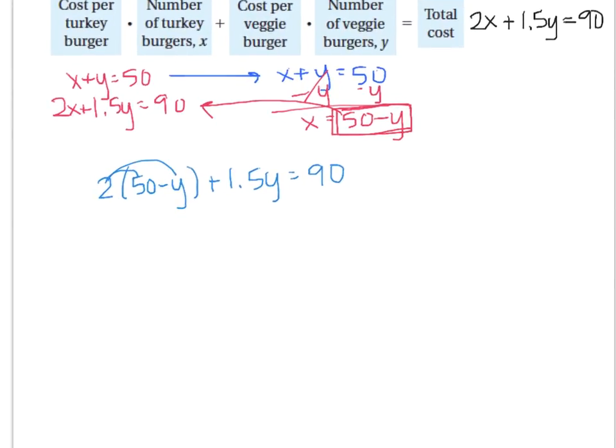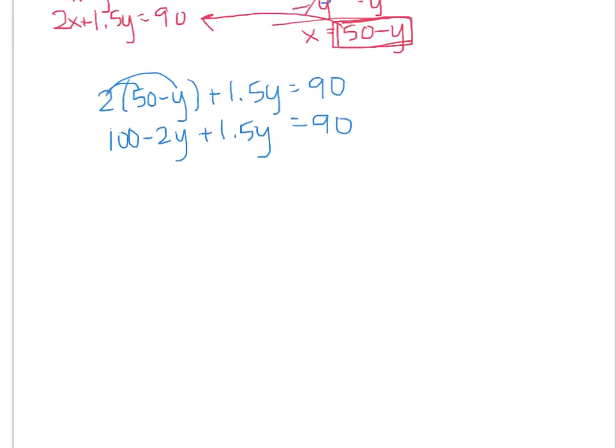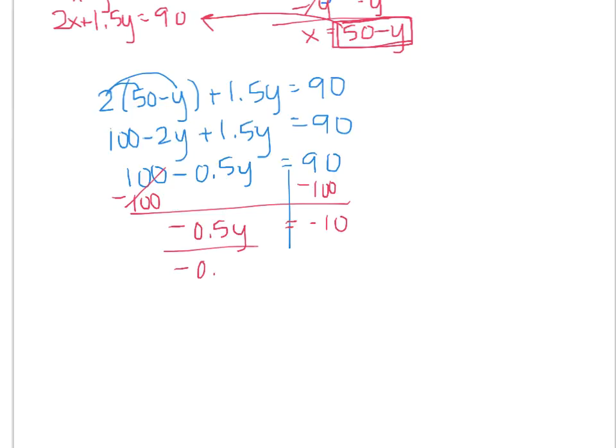You will typically have to distribute in these types of examples, so if you're bad at distributing you might want to practice that. I get 100 minus 2y plus 1.5y equals 90. Now it's just a throwback to chapter 1 and math 7 where you combine like terms. So I get 100 minus 0.5y and now I will move the 100 over. Negative 0.5y equals negative 10. Divide by negative 0.5.